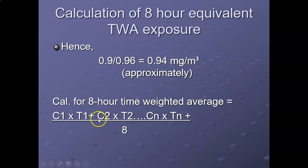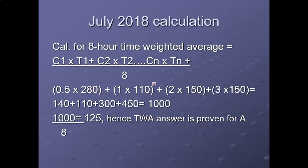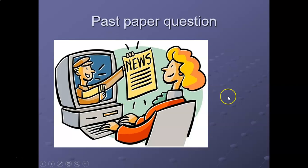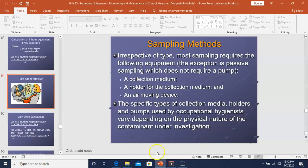If given multiple exposure scenarios, the TWA formula is: sum of (concentration × time) for each period, divided by 8. Take the concentration in mg/m³, multiply by the time, add up those products for all consecutive periods, and divide by 8.